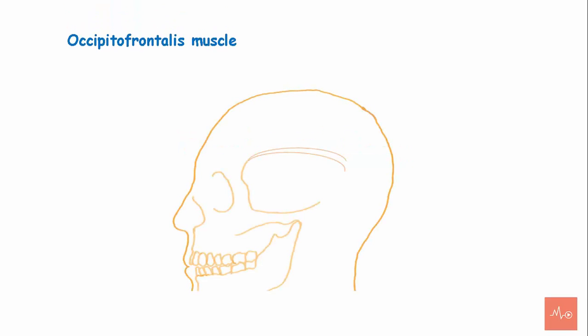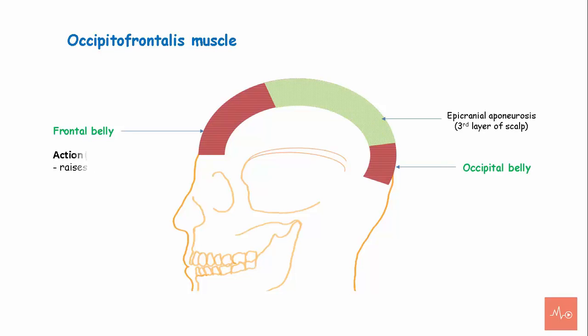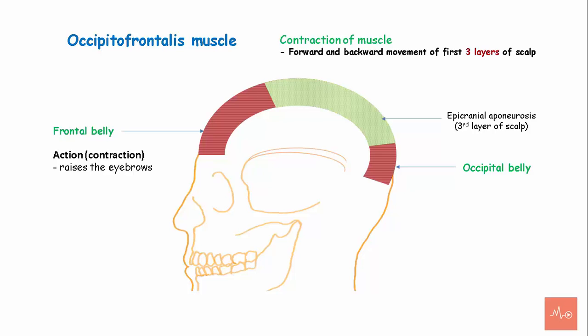The occipitofrontalis muscle is the chief muscle of the scalp. It has a frontal belly and an occipital belly connected by the epicranial aponeurosis. Contraction of the frontal belly raises the eyebrows. Contraction of the occipitofrontalis muscle leads to forward and backward movement of the first three layers of the scalp.